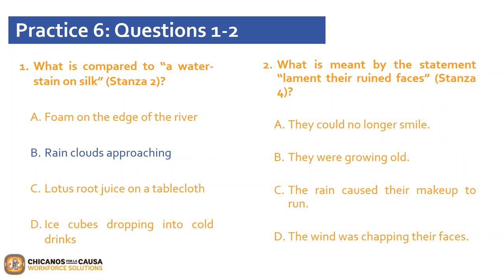Question 2 asks: what is meant by the statement 'Laminate their ruined faces,' Stanza 4? Would it be A, they could no longer smile? B, they were growing old? C, the rain caused their makeup to run? Or D, the wind was chopping their faces? If you answered C, the rain caused their makeup to run, that is correct. The previous two lines mentioned 'Soaked by the shower and drenched.' Immediately preceding the mention of 'ruined faces' is a description of streaked mascara. The girl's makeup is streaked because of the rain.